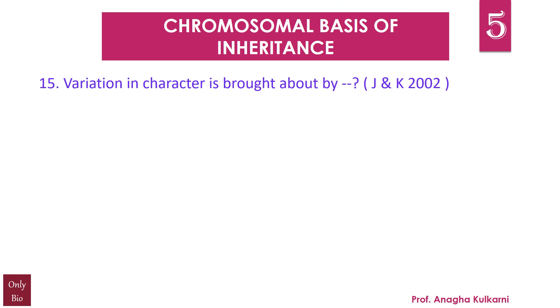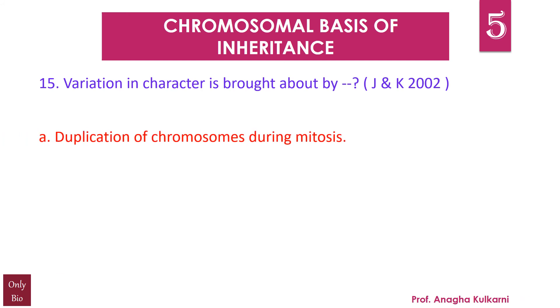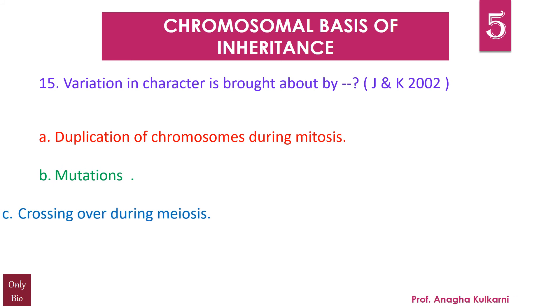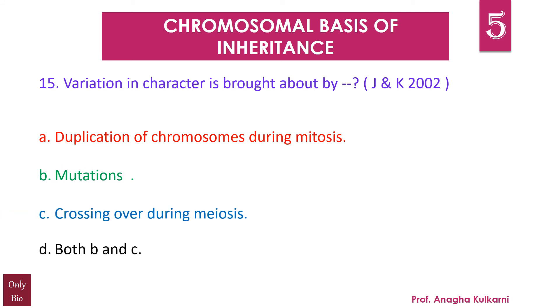Question number 15: Variation in character is brought about by — A) duplication of chromosomes during mitosis, B) mutations, C) crossing over during meiosis, D) both B and C. The correct answer is D — both mutations and crossing over during meiosis can bring about variation in character.